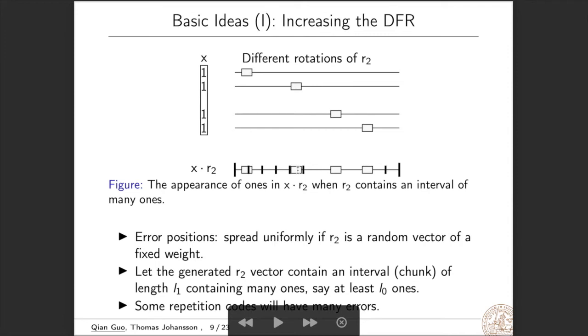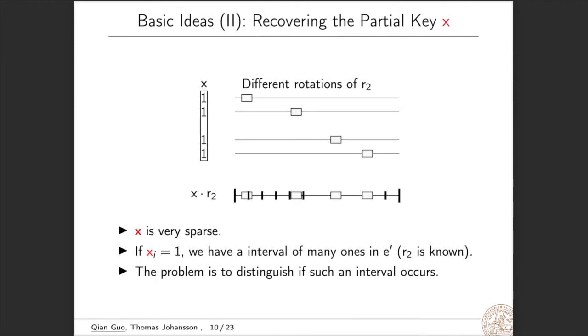Next, we need to find the correlation between the partial key x and the collected decryption failures. Because x is sparse and we know the value of r2. So if x is 1, then we have an interval of many ones in e prime as here. So the problem is to distinguish if such an interval occurs. If so, we know that the corresponding position in x should be 1, otherwise it should be 0.